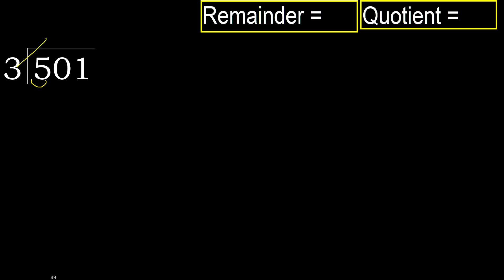3 — multiply by which number is nearest to 5, but not greater? 3 multiply by 2 is 6, which is greater. 3 multiply by 1 is 3, which is not greater. Ok.